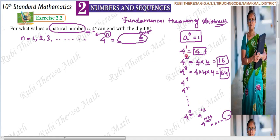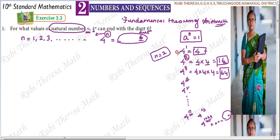When N equals 2, the value ends with 6. Let's check: 4 power 1 is 4, 4 power 2 is 16. So N equals 2, the value ends with 6.